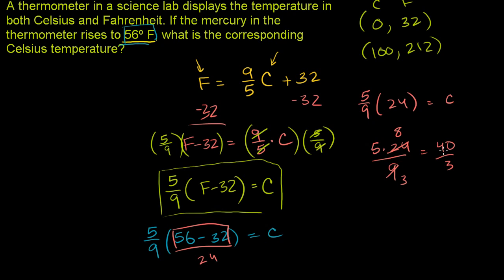If we want to write this as a mixed number, 3 goes into 40 13 times, and you have a remainder of 1. So it's 13 and 1 third.